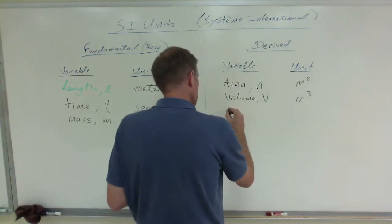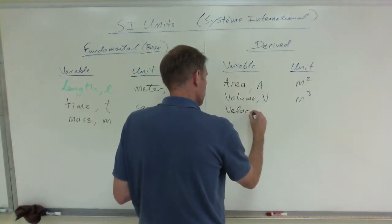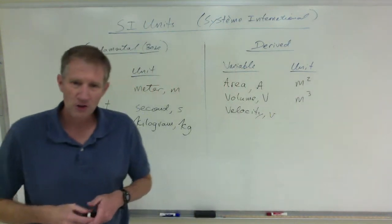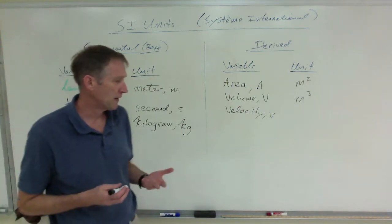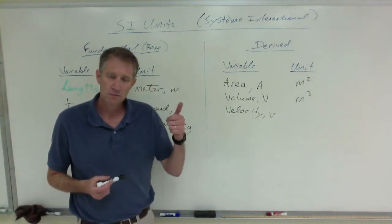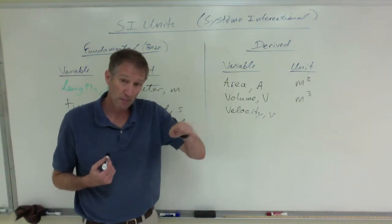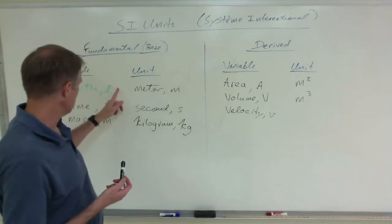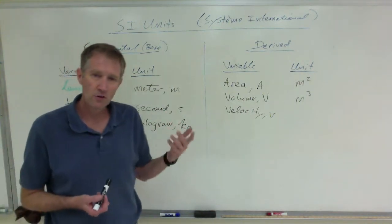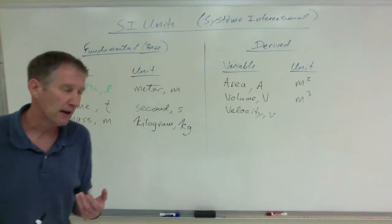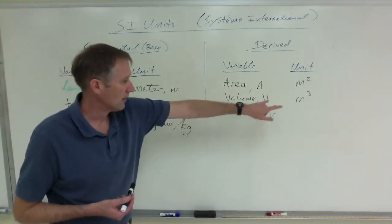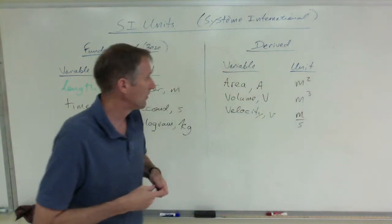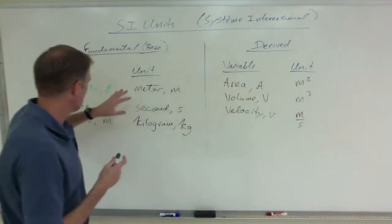A couple others. Velocity. That will be a lowercase v. If you look at your speedometer, it measures your speed in miles, which is a length or distance, per divided by hour, miles per hour. Well, that's length over time. A distance unit over a time unit. Well, of course, miles and hours are not SI. So to turn that into an SI unit, we have meters per second. See how these are all derived from these.